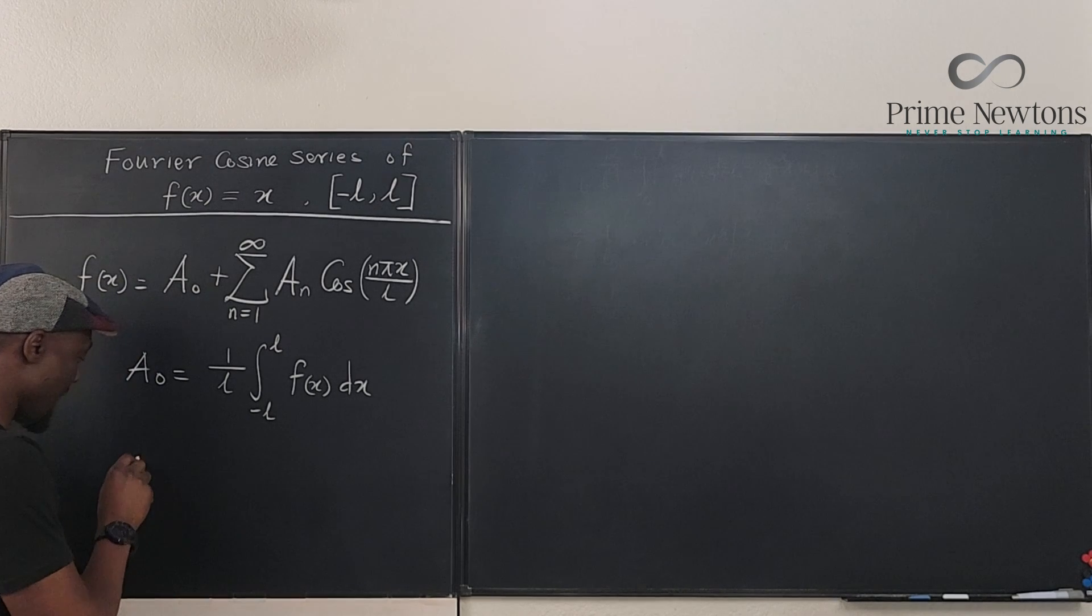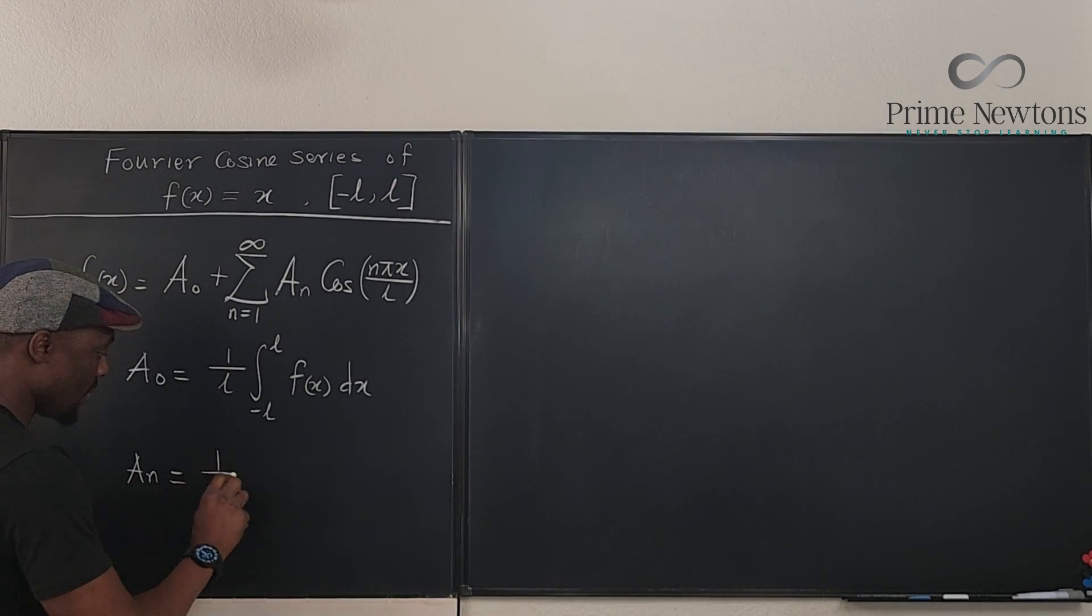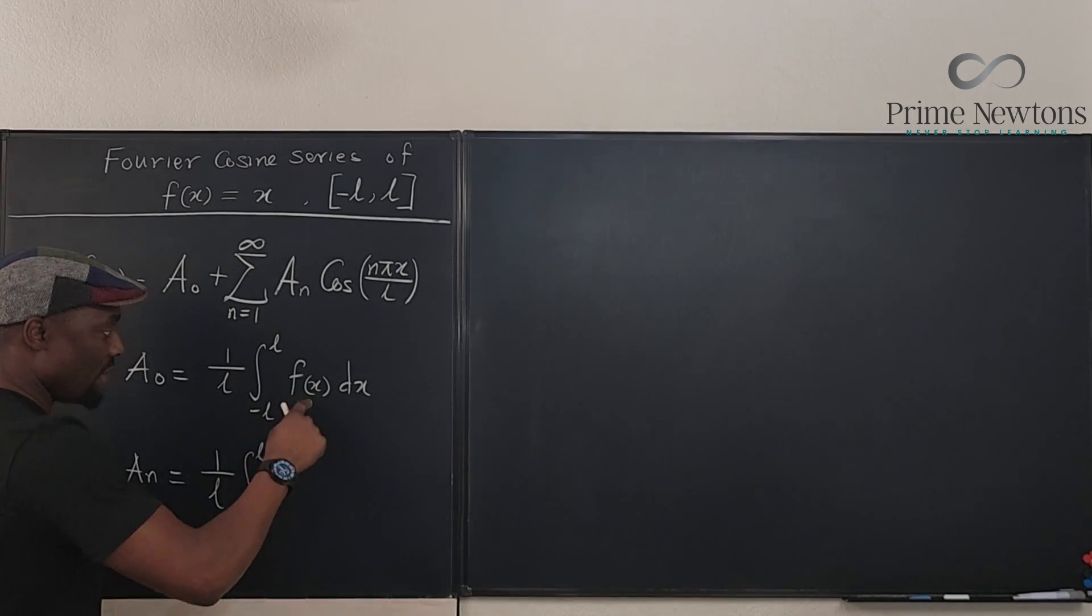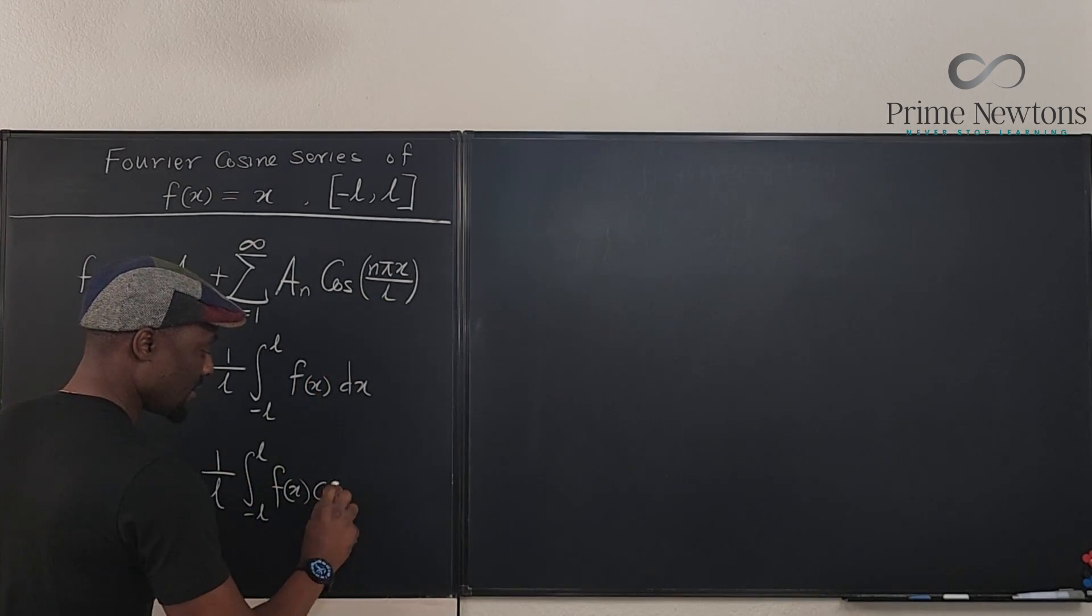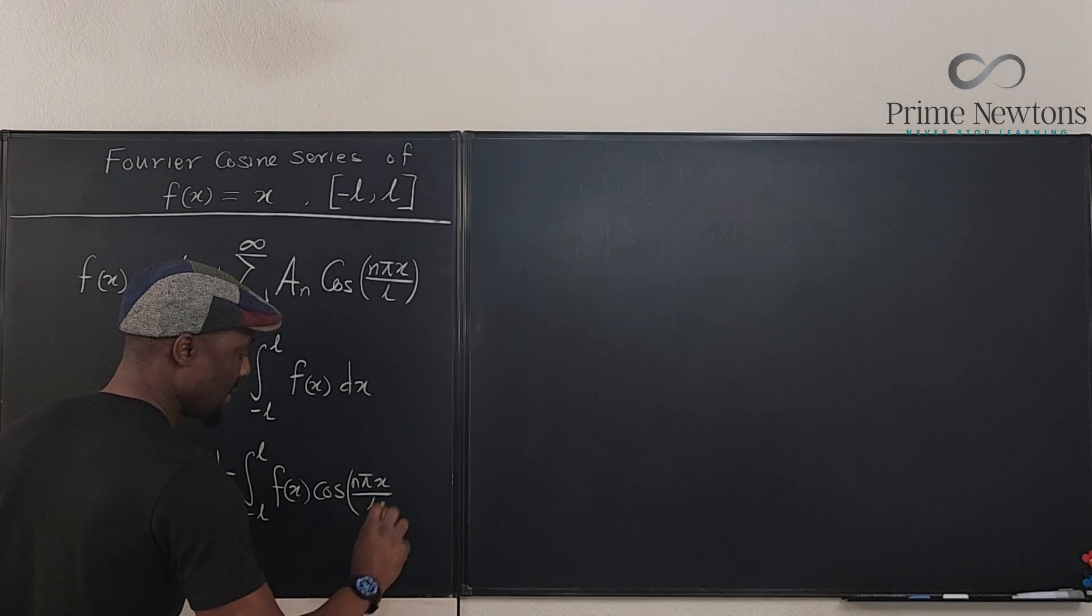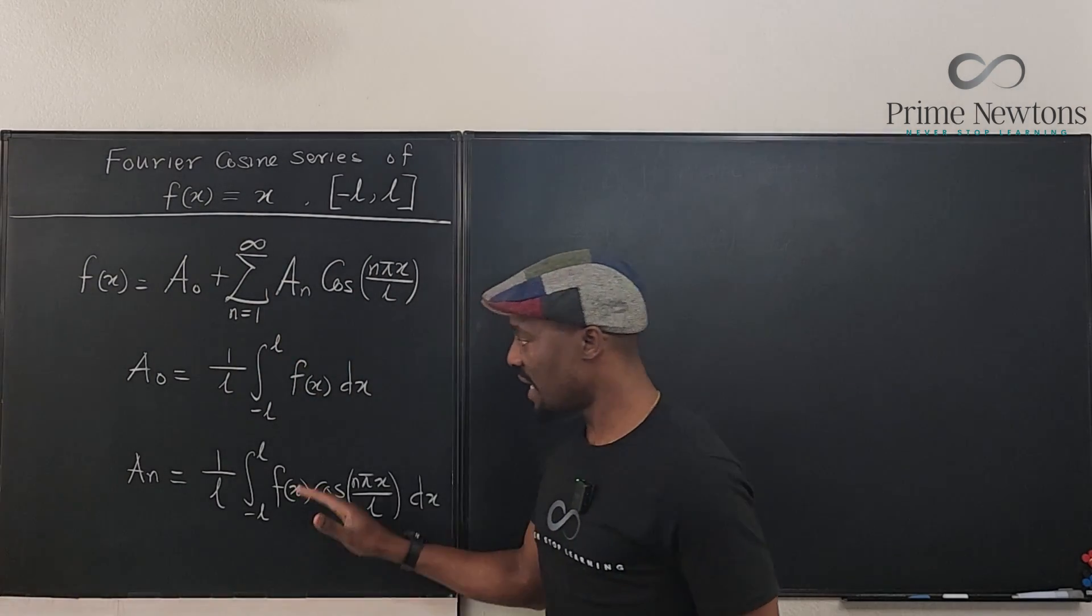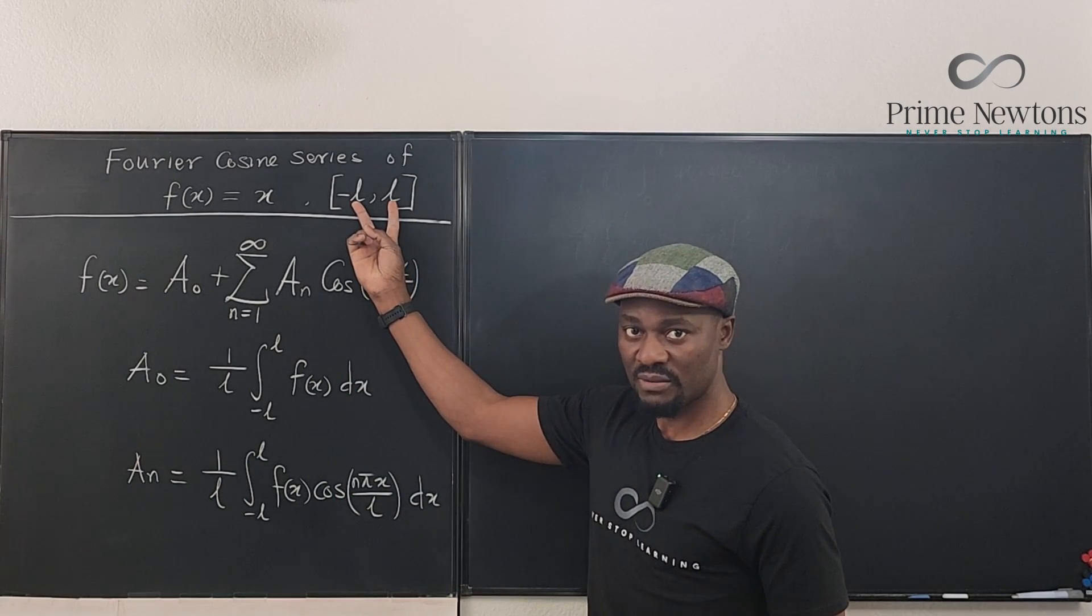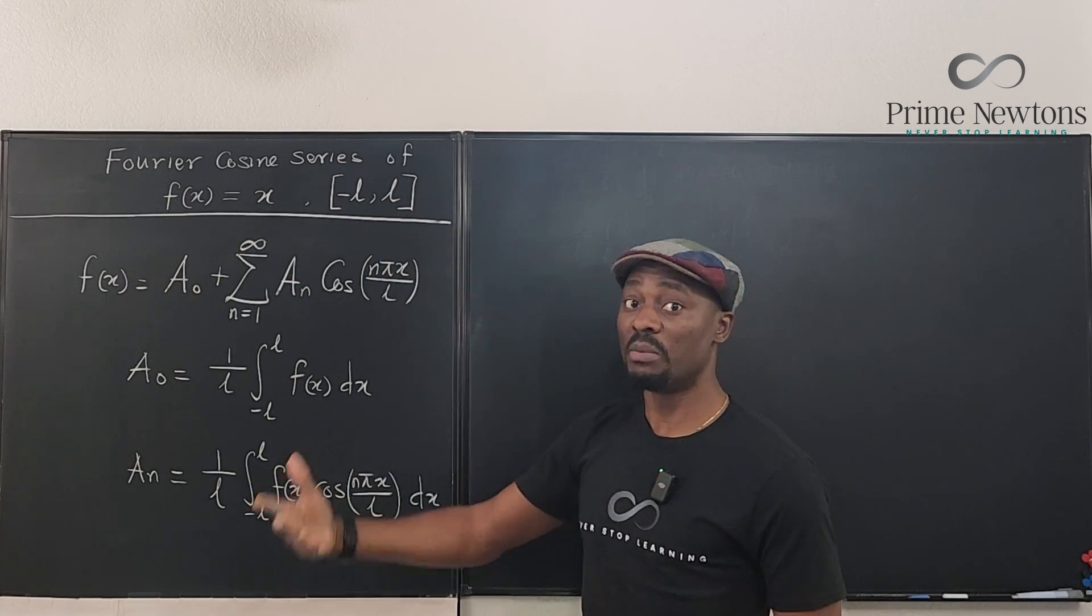If you're looking for a_n, then it's going to be 1/L also, the interval from negative L to L of this function that you're dealing with multiplied by cosine(nπx/L). So these are the two things you want to put in your head whenever you have the situation. If the situation is from zero to L, then you need to double it.